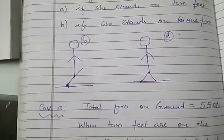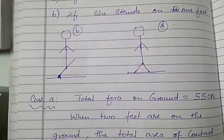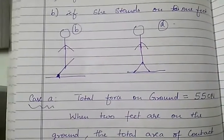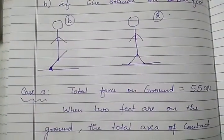Taking the first case in which the girl is standing on two feet, what is given in the question is total force on the ground that is the weight of the girl that is 550 Newton that would be the total force exerted on the ground.